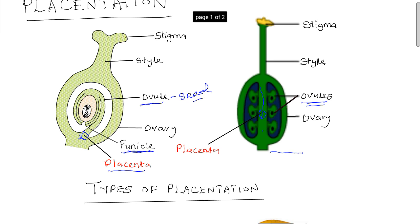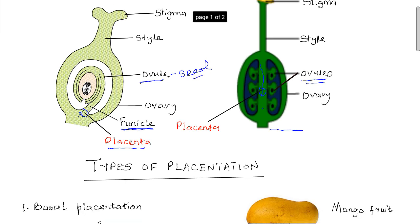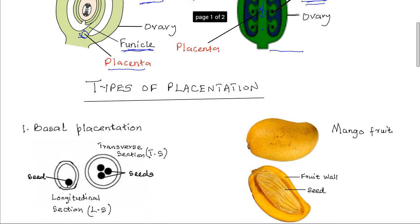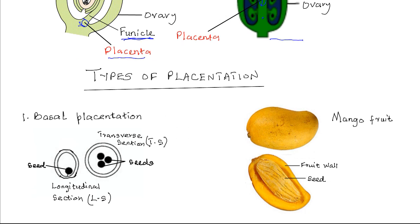There are five types of placentation. The first one is known as basal placentation. In basal placentation, the placenta is found at the base of the ovary, where one or more ovules or seeds are attached. This is how an ovary with basal placentation looks like in longitudinal section, or a fruit with basal placentation.